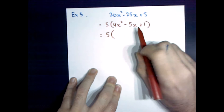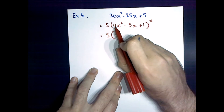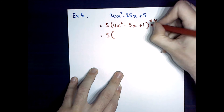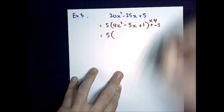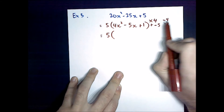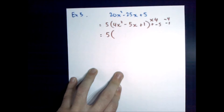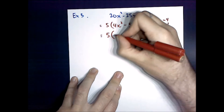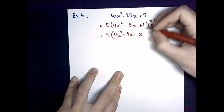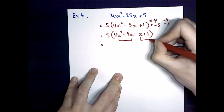So I write my 5 out the front. What I need to do is find two numbers that multiply to get 4 times 1 — so multiply to get 4 — and add to get negative 5. So my two numbers are going to be negative 4 and negative 1. Negative 4 times negative 1 is positive 4, and negative 4 plus negative 1 is negative 5. So I'll split this middle term: 4x squared minus 4x minus x plus 1. I'm going to factorise by grouping, doing the front two and the back two.